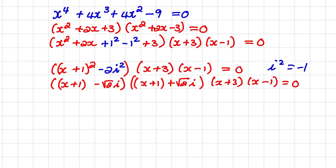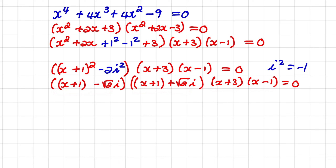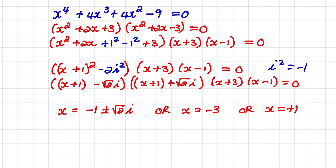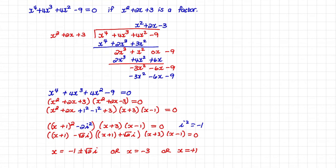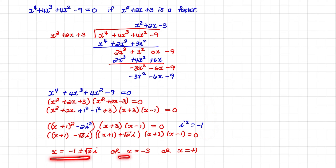So to find the values of x that will satisfy this equation, I set each of these brackets equal to 0. That leads to x equals negative 1 plus or minus the square root of 2i, or x can be equal to negative 3, or x can be equal to positive 1. So we have four possible solutions for this equation. Remember, originally we were given a factor to this expression, and we used long division to create our second set of brackets. From there we followed the normal steps as in previous videos to find the values of x.